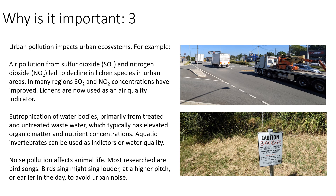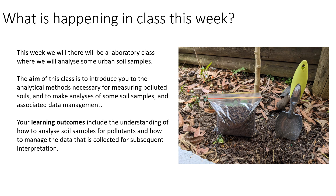The third example of urban impacts on ecosystems is noise pollution and its effect on animal life. The most researched area is bird songs. Some bird species sing louder to be heard above traffic noise, some sing at a higher pitch to differentiate their song from the generally lower-pitched background noise of the city, and some birds have adapted to sing earlier in the day to avoid urban noise and rush hour. So there is an ecological impact on birds as well.